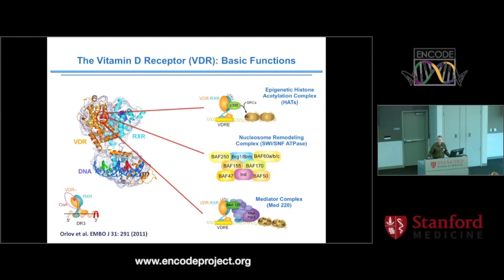Everyone needs an entry point in terms of trying to understand how enhancers work. That can certainly be evolution, differentiation, or disease. But also, if you're going to study enhancers, you may be interested in systemic regulation of these regulatory elements by hormonal systems such as the vitamin D system. That's what we have used to not only understand the vitamin D system itself, but also to get into the regulation of enhancers.